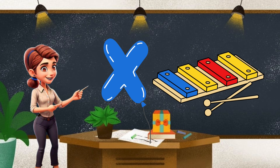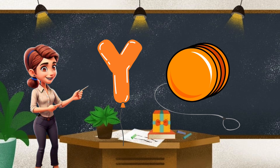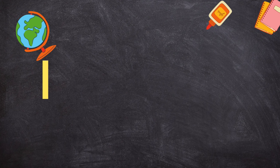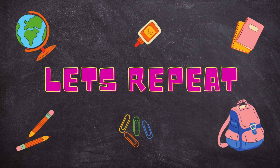X. X for xylophone. X is blue in color. Y. Y for yo-yo. Which color is this, children? Z for zip. Which color is this, children? Comment right now to get a heart.